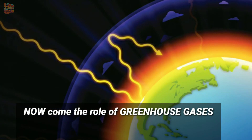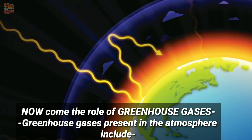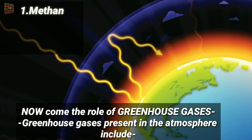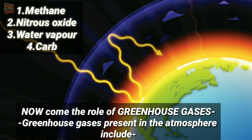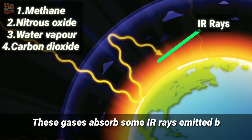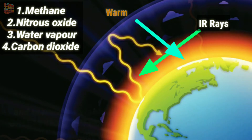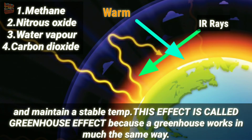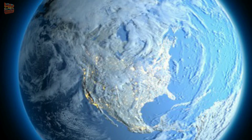Now comes the role of greenhouse gases. Greenhouse gases present in the atmosphere include methane, nitrous oxide, water vapor, carbon dioxide, and so on. These gases absorb some IR rays emitted by the Earth's surface and help in keeping the Earth warm and maintaining a stable temperature. If these gases were not there, the temperature of the Earth would have been extremely cold and one could not survive.